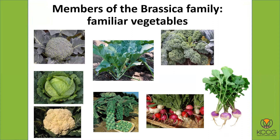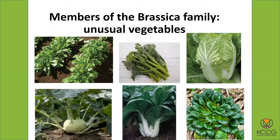There are also some more unusual ones you may not be as familiar with. In the upper left-hand corner we have arugula, sometimes called rocket. Right below that is kohlrabi, which is a very strange-looking vegetable. In the center we have a vegetable called Chinese broccoli — it has an Asian name which is a little difficult to pronounce. Right below that is another Asian member of the brassicas called bok choy, which you've probably seen in the grocery store.